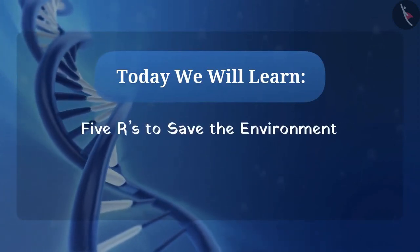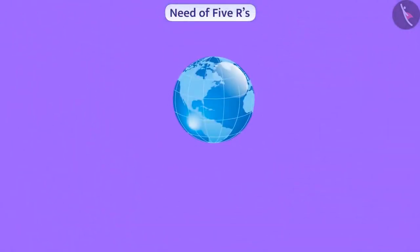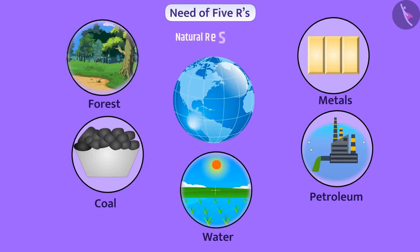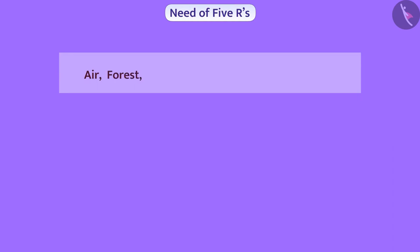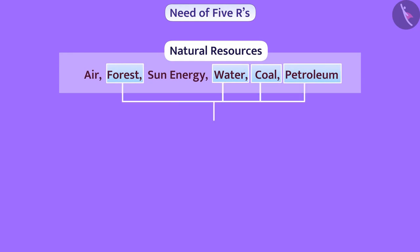We obtain various things from the environment for our development. All the things we need from the environment are called natural resources. Air, forest, sun energy, water, coal, petroleum, etc. are natural resources. Resources like forest, water, coal, and petroleum cannot be used again once they are used; therefore these resources are limited.